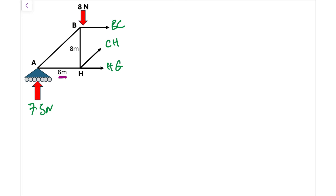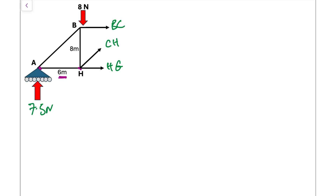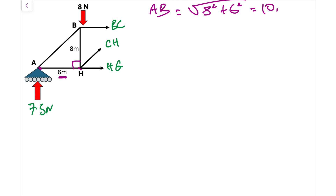For the left-side system, we note that each panel spans 6 meters horizontally, and the vertical height is 8 meters. It's also useful to know the length of member AB: applying Pythagoras, AB = √(8² + 6²) = √(64 + 36) = √100 = 10 meters.